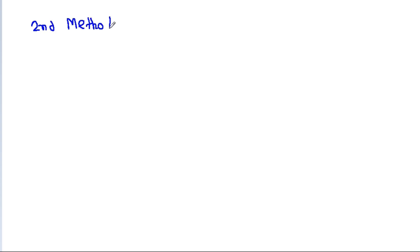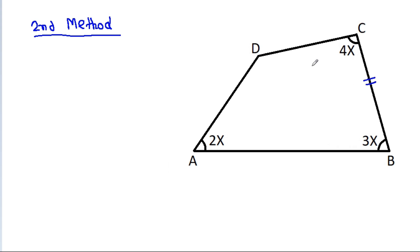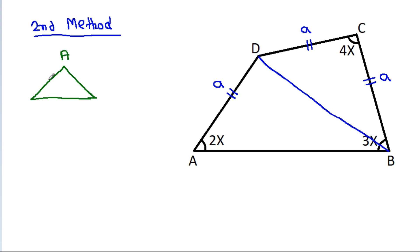We have BC equal to CD equal to AD, suppose each equal to A. Now if we join BD, then in any triangle, if AB is equal to AC, then the base angles are equal. So here, if this angle is theta, then this angle will also be theta, and this angle will be 3x minus theta.